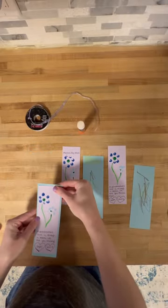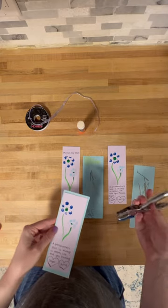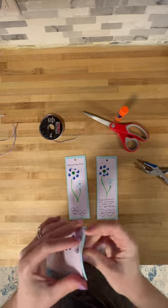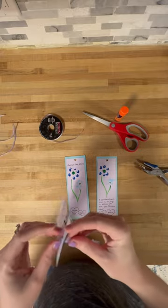Then you'll glue on the backing of the bookmark, use a hole punch, and thread through the ribbon. To make it an extra special gift, you can even add on a gift card to their favorite bookstore.